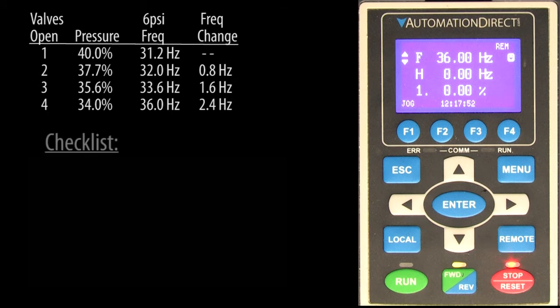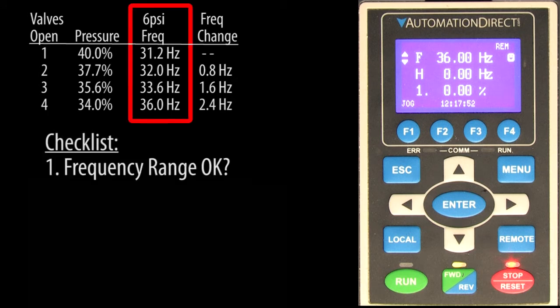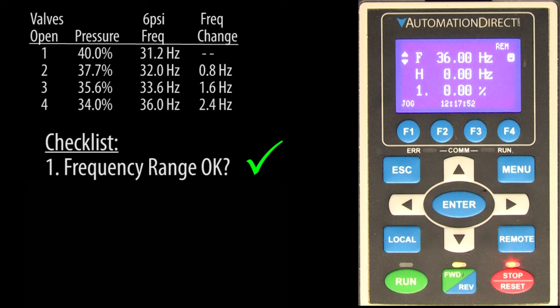Before we implement that, let's check a couple things. First, we see that since we are only using roughly 30 to 40 Hz of the drive's 60 Hz frequency range, we now know the drive has more than enough frequency range to compensate for the pressure drop even when all valves are open. That's really important to know.